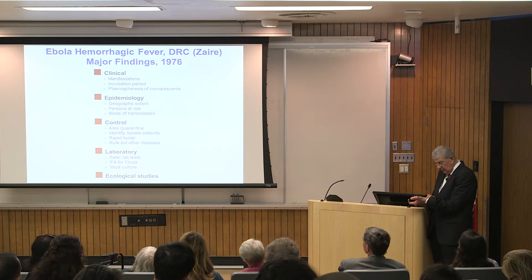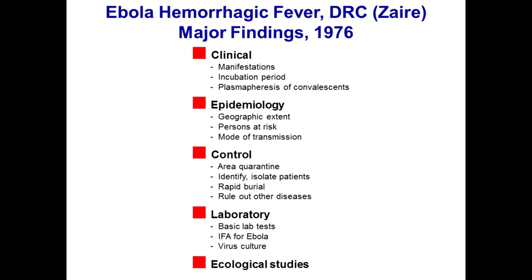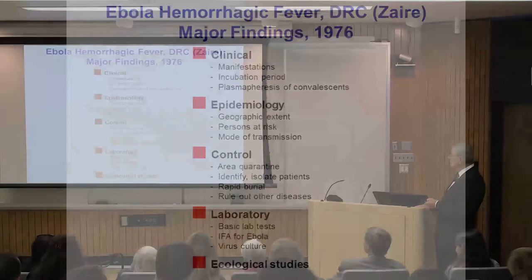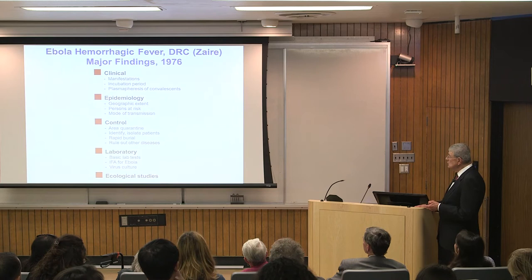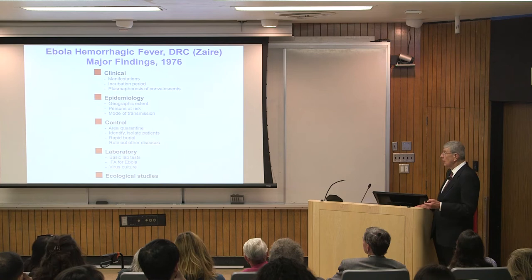So what did we learn? From the first outbreak, we defined the clinical manifestations, the incubation period, and started plasmapheresis. We determined the geographic extent, the persons at risk, and the mode of transmission. Quarantine worked. Identify and isolate patients. Rapid burial. We emphasized building on their smallpox knowledge and provided them with bleach and formaldehyde to decontaminate.